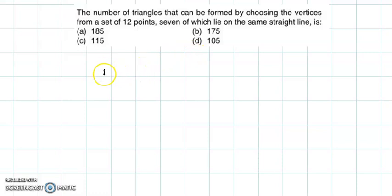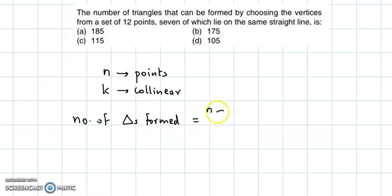Now we know that if we have n points and if k points are collinear, collinear means lying on the same straight line, then the number of triangles formed is given by nC3, because for a triangle we need to select three points, so nC3 minus kC3.